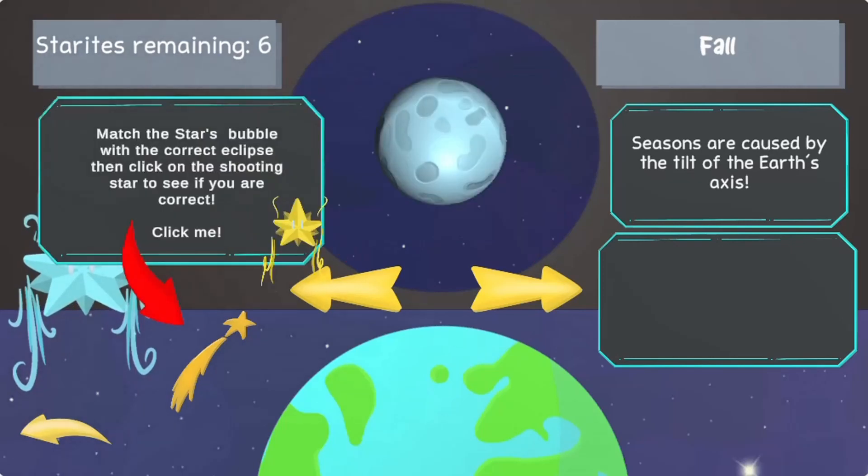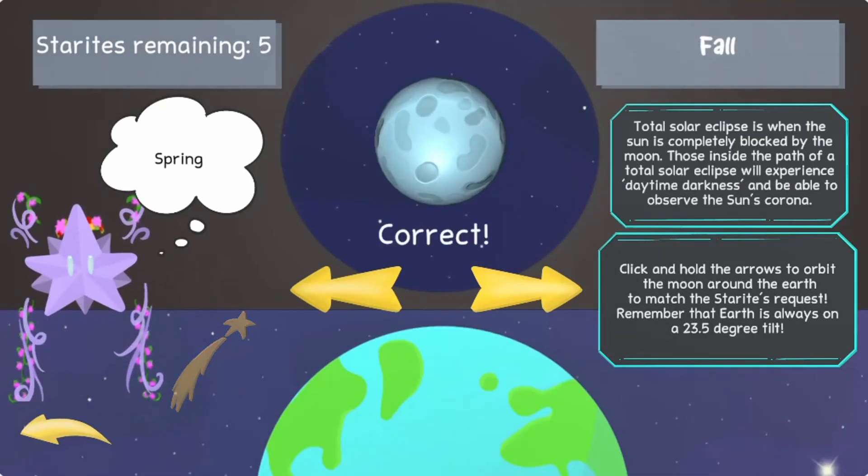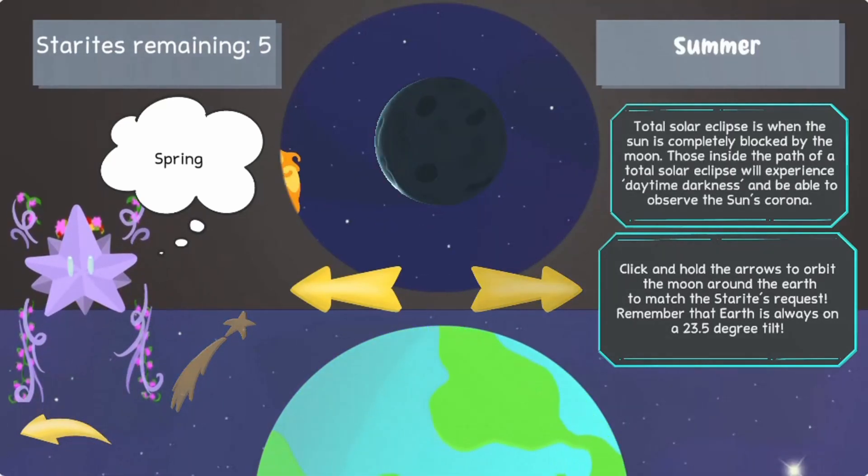In this informative instructional game, starites have been knocked off the moon and must go back. Help the starites find the correct eclipse in order to get back home.